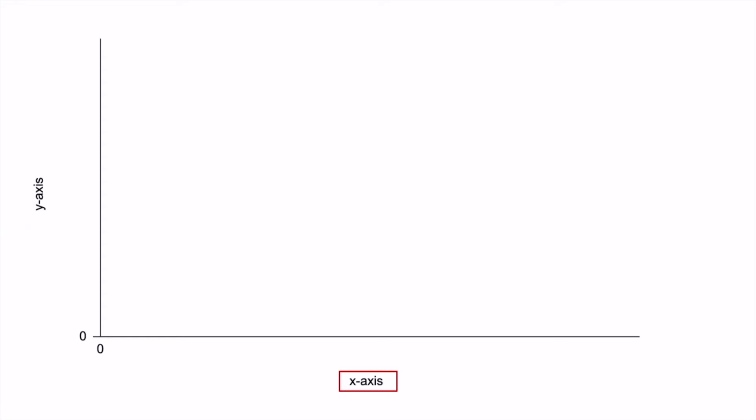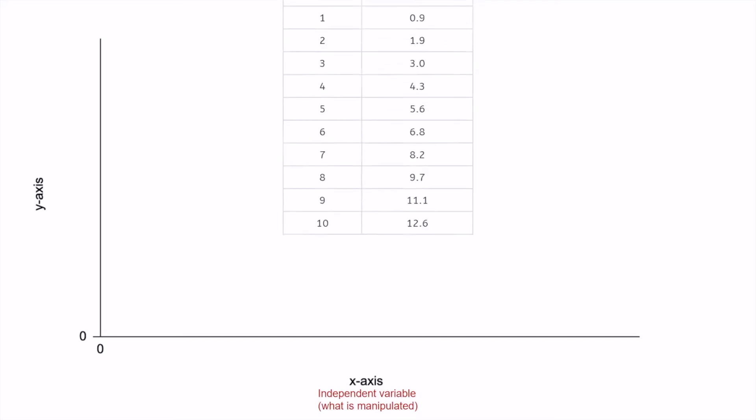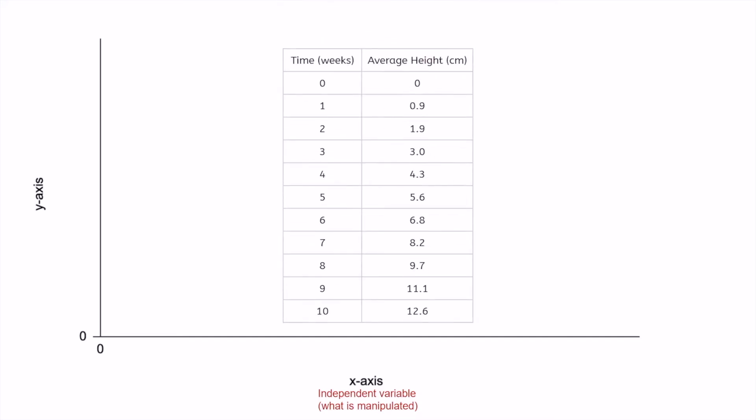The x-axis is home to our independent variable, or the variable we have the independence to manipulate or change. Looking at our data, we had control over when we measured the strawberry plants. So we'll label the x-axis time, making sure to include the unit of measurement as well.